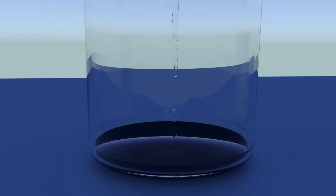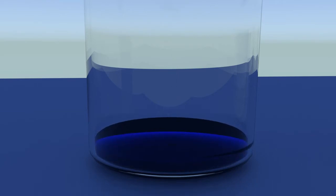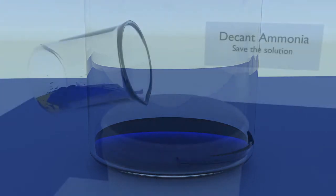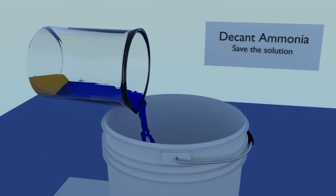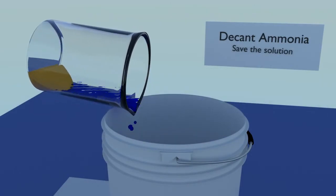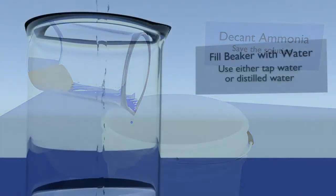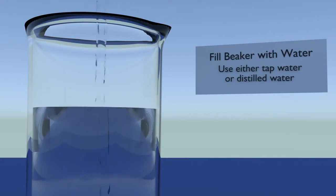The ammonia will rapidly turn blue as it reacts with a small amount of acid that is still clinging to your gold mud. Decant the ammonia, saving the solution. Fill your beaker with water. Tap water is fine.